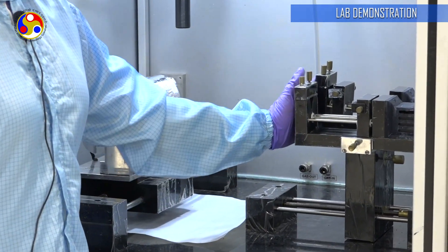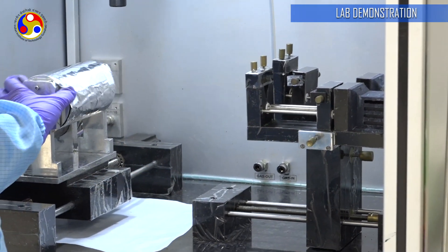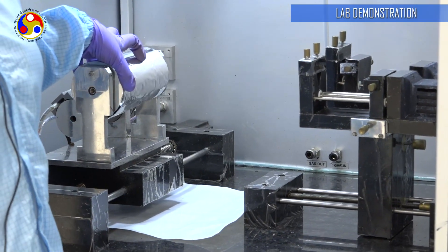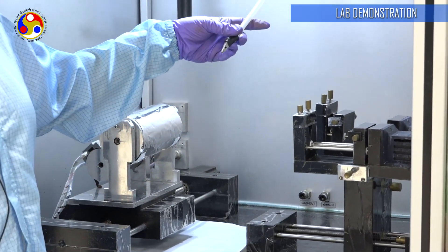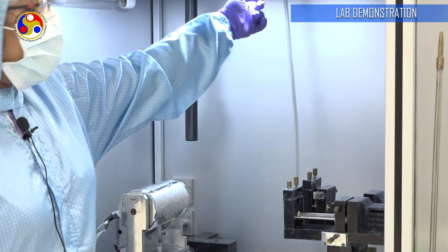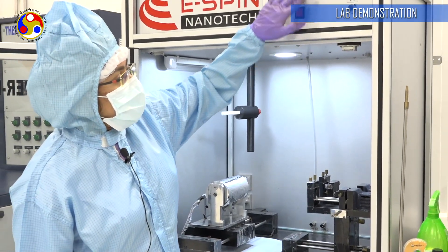These two here are two syringe pumps. This is the collector where the sample will be deposited during the electrospinning process. This is a power cable connected to a high voltage power source which is inside here. That power source is controlled by this panel over here.